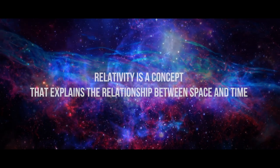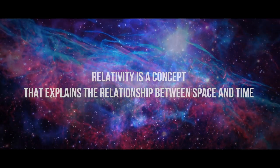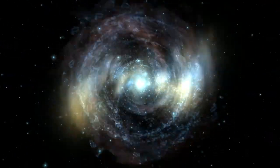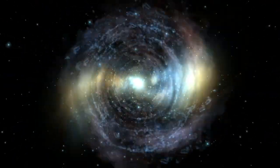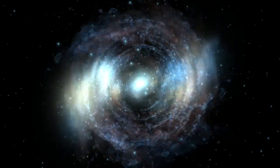Relativity is a concept that explains the relationship between time and space. According to it, the laws of physics are the same for all observers, regardless of their relative motion. In the early 1900s, Nikola Tesla argued that Albert Einstein's general theory of relativity was wrong.